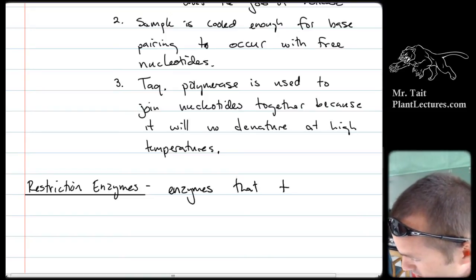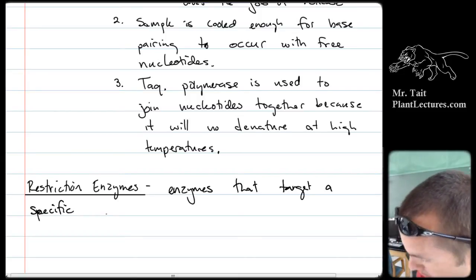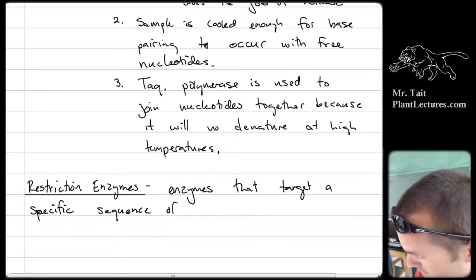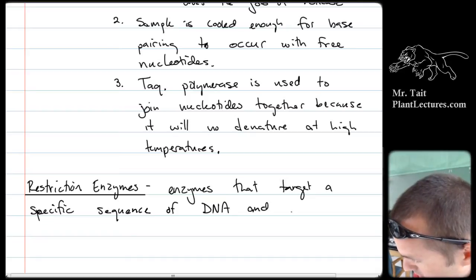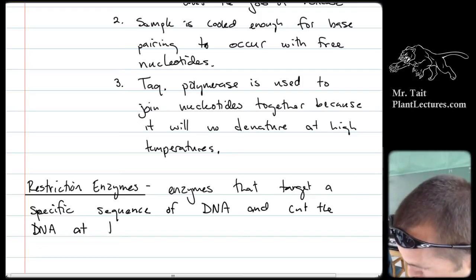Restriction enzymes target a specific sequence of DNA and cut the DNA at that sequence. They target DNA sequences that don't exist in the prokaryote's own chromosome, so any foreign DNA from a virus that gets injected into the cell gets cut up so it doesn't infect the cell.